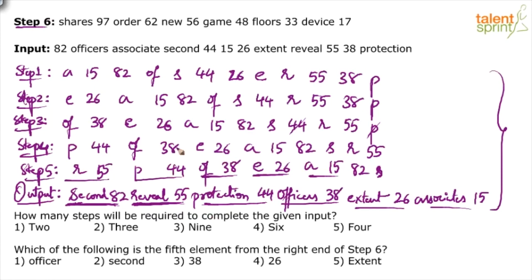Question one: How many steps are required to complete the given input? Six steps — step six is the last step. Question two: Which is the fifth element from the right end of step six? Counting from the right: one, two, three, four, five — the answer is 38. This can also be answered logically: step six has words and numbers alternating, so the fifth element from the right is a number, specifically the third smallest, which is 38.